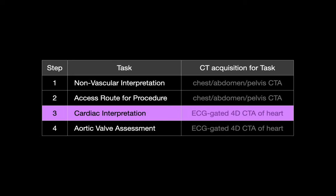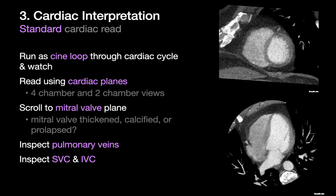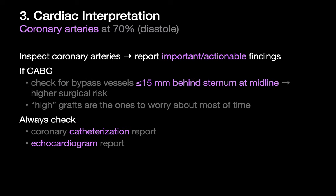Before we begin our aortic valve assessment using our ECG-gated cardiac CTA, perform a standard read of the heart first. Go through your standard cardiac CT workflow, which will probably involve reading the ECG-gated 4D cardiac CTA volume in your 3D workstation. Generally, folks tend to make less of a fuss about the coronary arteries on a TAVR planning CT, but will report coronary artery findings if those findings are important or potentially actionable. If the patient is post-CABG, check for bypass grafts less than 15 millimeters behind the sternum, since the resultant surgical risk may tilt a case from surgical aortic valve replacement towards TAVR in some borderline situations. Be sure to check the coronary cath and ECG reports that were recently performed.